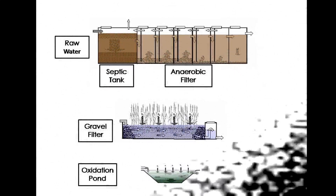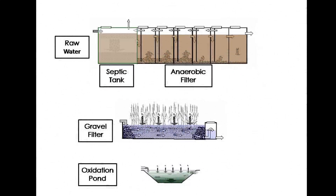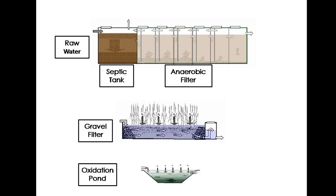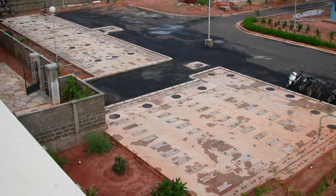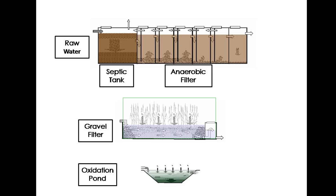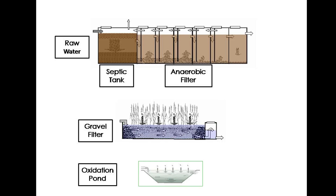When water enters the system, it first goes into a septic tank where the initial settlement happens. After that, the water flows into the anaerobic baffle reactor — a set of tanks in series where water flows from one baffle reactor to the next. The entire tank can be positioned underground, so the ground surface above can still be used for various activities. The water then leaves the baffle reactor and enters the aerobic process through a gravel filter.